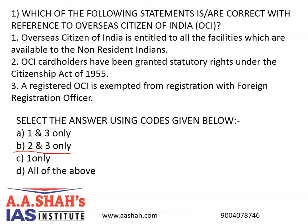OCI scheme was introduced by amending the Citizenship Act 1955 in August 2005. A foreign national who was eligible to become a citizen of India on 26 January 1950, or was a citizen of India on or at any time after 26 January 1950, or belonged to a territory that became part of India after 15 August 1947, is eligible for registration as OCI. Minor children of such persons are also eligible. However, if the applicant had ever been a citizen of Pakistan or Bangladesh, he or she will not be eligible.